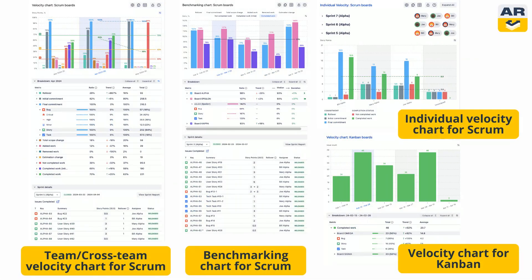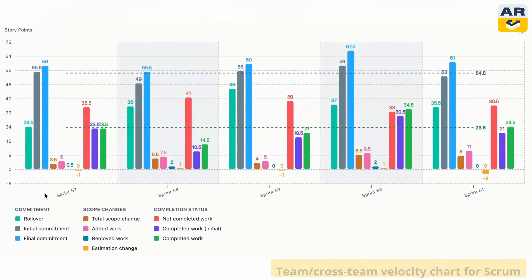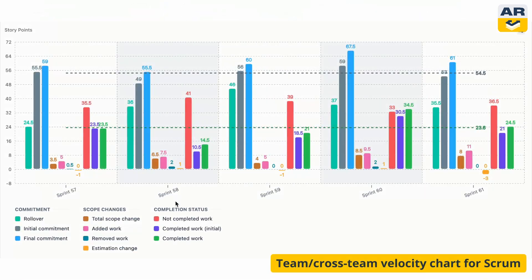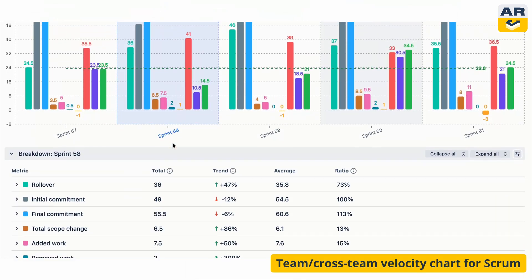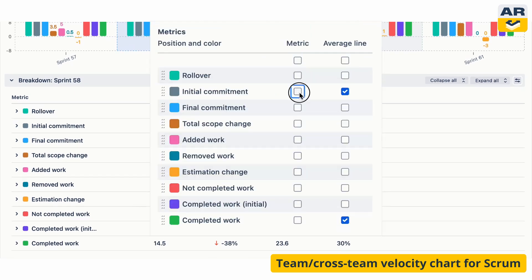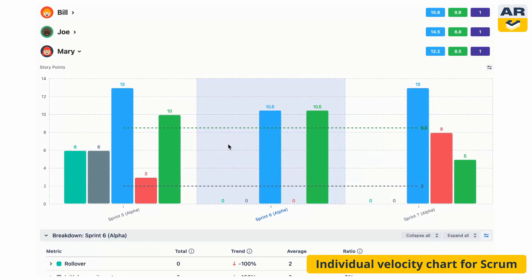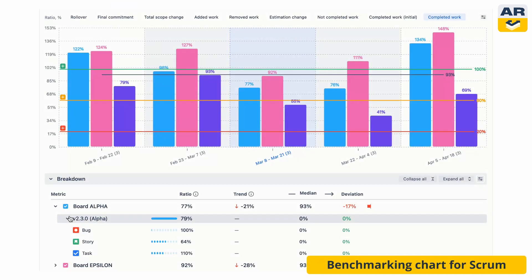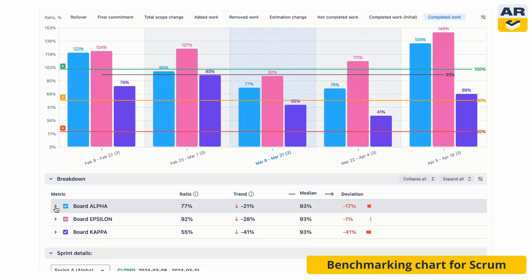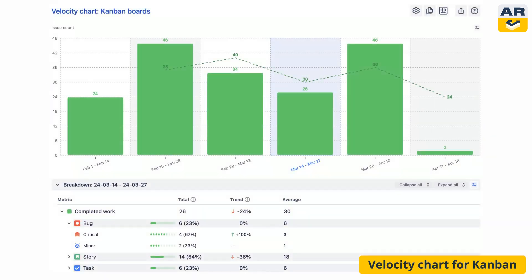Now let's see what charts this app has to offer. There is a set of velocity charts to examine every detail of your sprints on the JIRA dashboard. For Scrum teams, the velocity charts show 10 key sprint metrics based on commitment, scope changes, and completion — pick which metrics and averages matter most to you in the settings. Use the individual velocity chart to see how each team member helps in a sprint, or flip the view to see sprints grouped by user. The benchmarking chart lets you see how different teams stack up against your benchmarks. And if you're running Kanban, there's a dedicated chart with all the same detailed analytics.